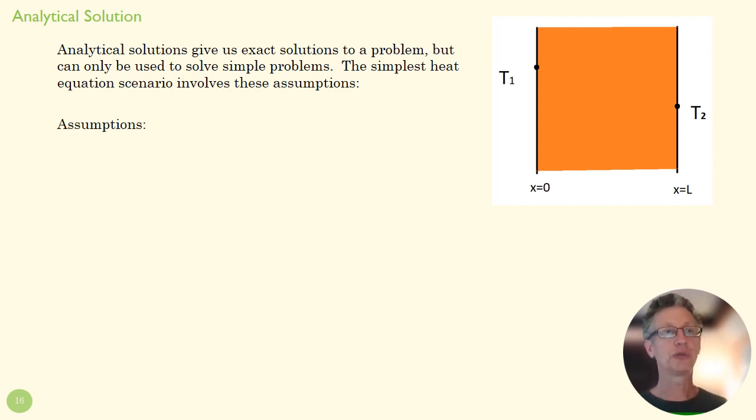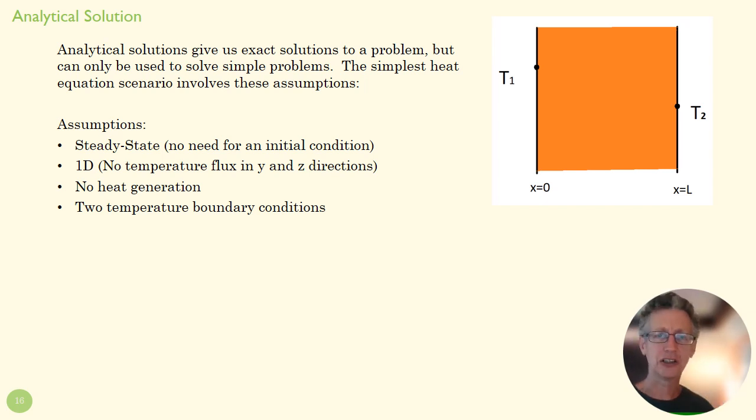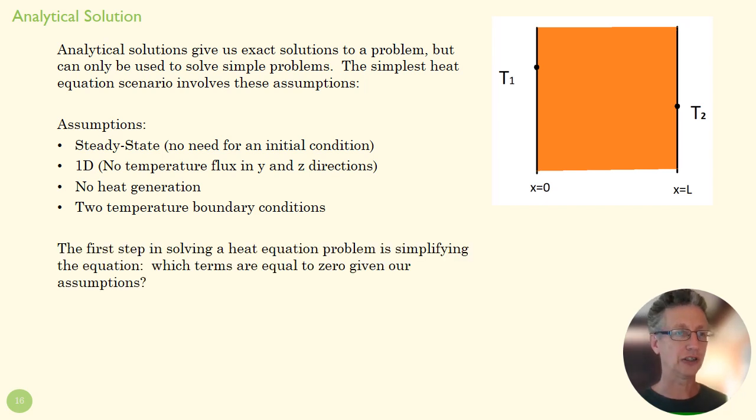So we're going to start with the simplest problem we can. Steady state, so we don't even need an initial condition. We're going to assume nothing's changing, 1D temperature field, so there's no flux in the X or Z directions, and no heat generation. And finally, two temperature boundary conditions. We're not going to deal with the flux boundary condition yet.